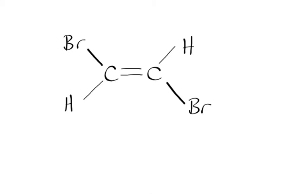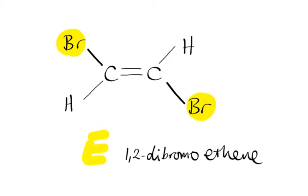So this is 1,2-dibromoethene, and hopefully we can see that this does exist as EZ isomers. We can probably see that the bromines, which is what we pick, are across from each other. So this represents the E isomer.